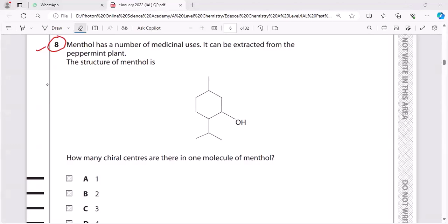Hello everyone, let's conquer this question. This is menthol and we have to figure out the chiral center. Let's see how many chiral carbons are there. You see this carbon? This carbon is surrounded by four different groups.